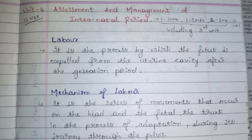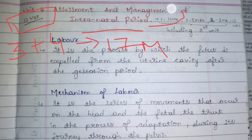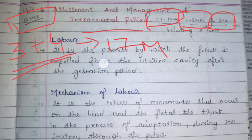Hello guys, welcome back to the channel. Today we are going to see Unit 4, that is assessment and management of the intranatal period. This unit consists of 17 marks, but units 3 and 4 are combined together for those 17 marks — 1 from 10 marks, 1 from 5 marks, and 1 from 2 marks. If you study both chapters 3 and 4, you are perfect with 17 marks.